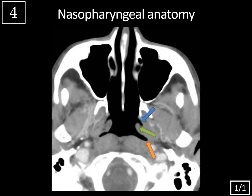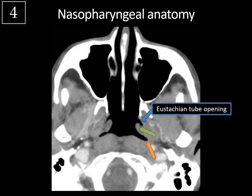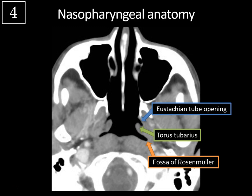All right, case four — name the nasopharyngeal anatomy here. We're looking at a cone-down image of the pharyngeal mucosal space at the level of the nasopharynx. You can tell we're at the nasopharynx because you have the osseous nasal septum at the midline, and you can see the pterygoid plates bilaterally. The anterior-most recess here is the eustachian tube opening. Just posterior to that is the torus tubarius — the cartilaginous portion of the eustachian tube. And then posterior to that, you have the fossa of Rosenmuller, also known as the posterolateral pharyngeal recess, which is the most common site for nasopharyngeal carcinoma. A nasopharyngeal carcinoma here can cause mass effect against the torus tubarius, obstructing the eustachian tube opening and giving unilateral mastoid effusion due to fluid backup. So whenever you have a unilateral mastoid effusion in an adult, look closely at the nasopharynx to make sure you're not missing a nasopharyngeal carcinoma.